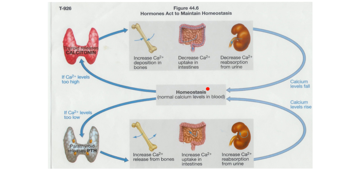Homeostasis means trying to keep normal levels of calcium in the blood. What happens if calcium levels — Ca²⁺ — get too high in the blood? They go above the normal range, which would be hypercalcemia. The thyroid gland — specifically the parafollicular cells of the thyroid — releases calcitonin, whose actions help bring calcium levels down, which is what you want if they're too high.